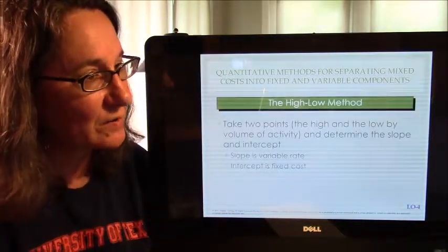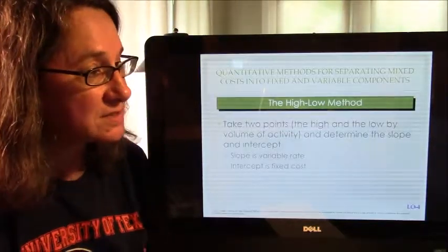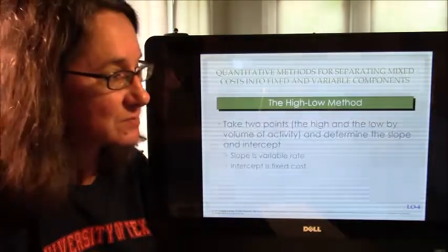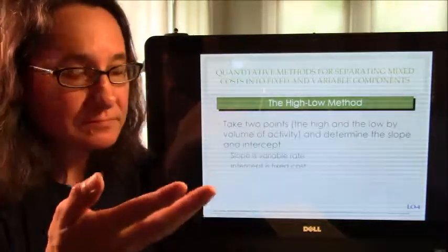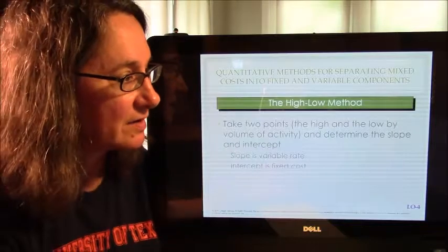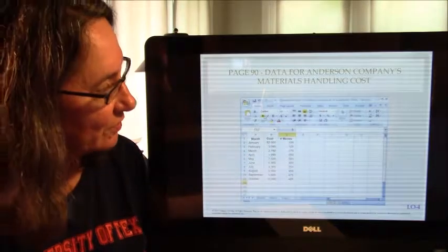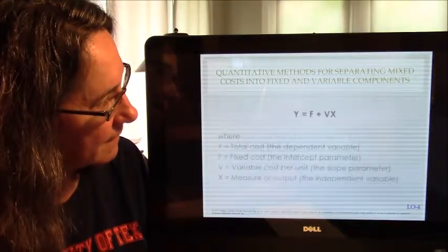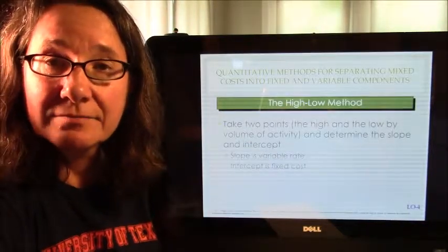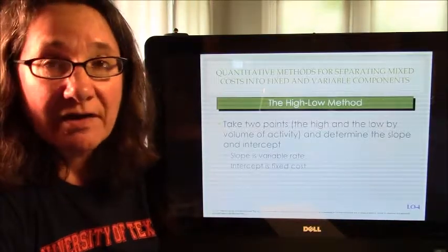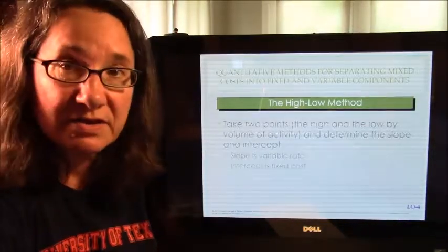Alright, so the first quantitative method we're going to talk about is the high-low method, and you might want to look at page 90 in your book, I believe is where they talk about high-low method. So, you can imagine that you have a bunch of data points. You have a bunch of data points. I know my cost, I know my number of moves. So I've got data points for that. I can turn those into a line.